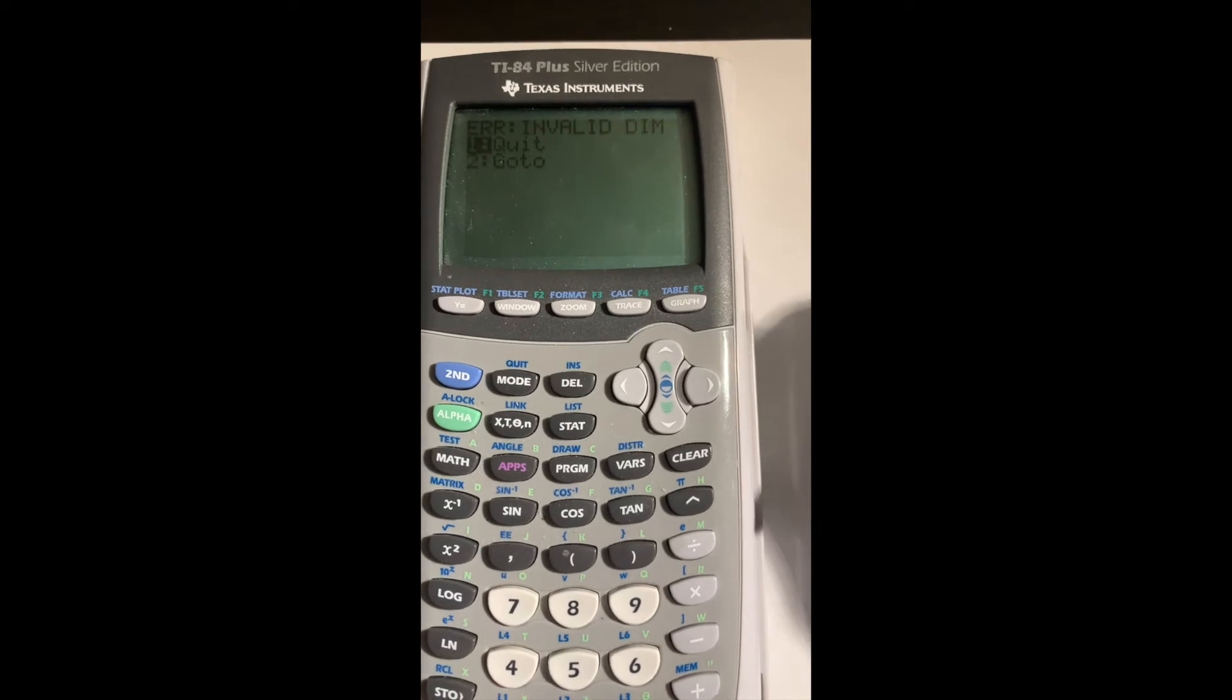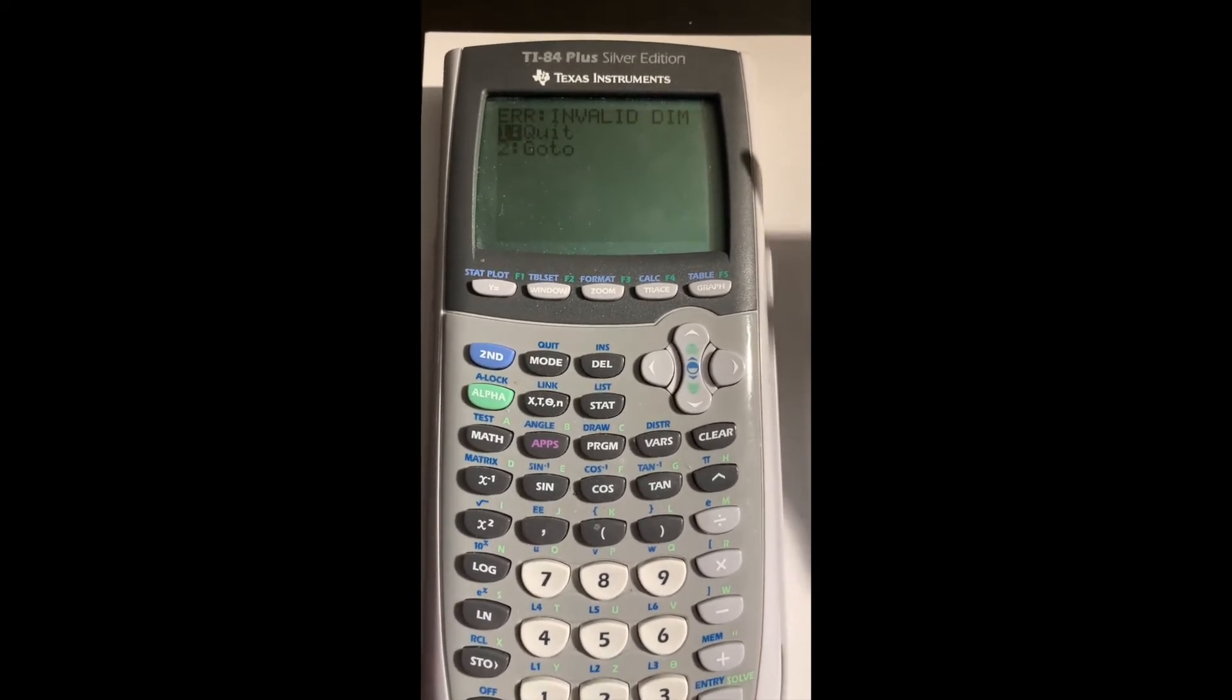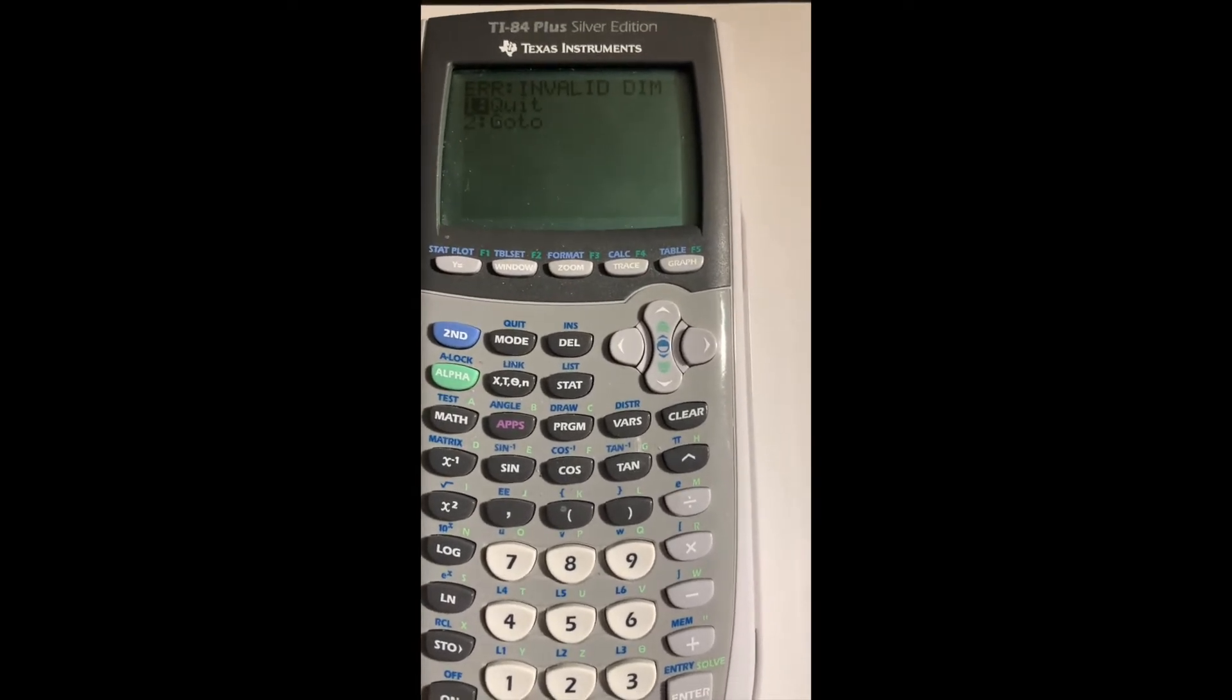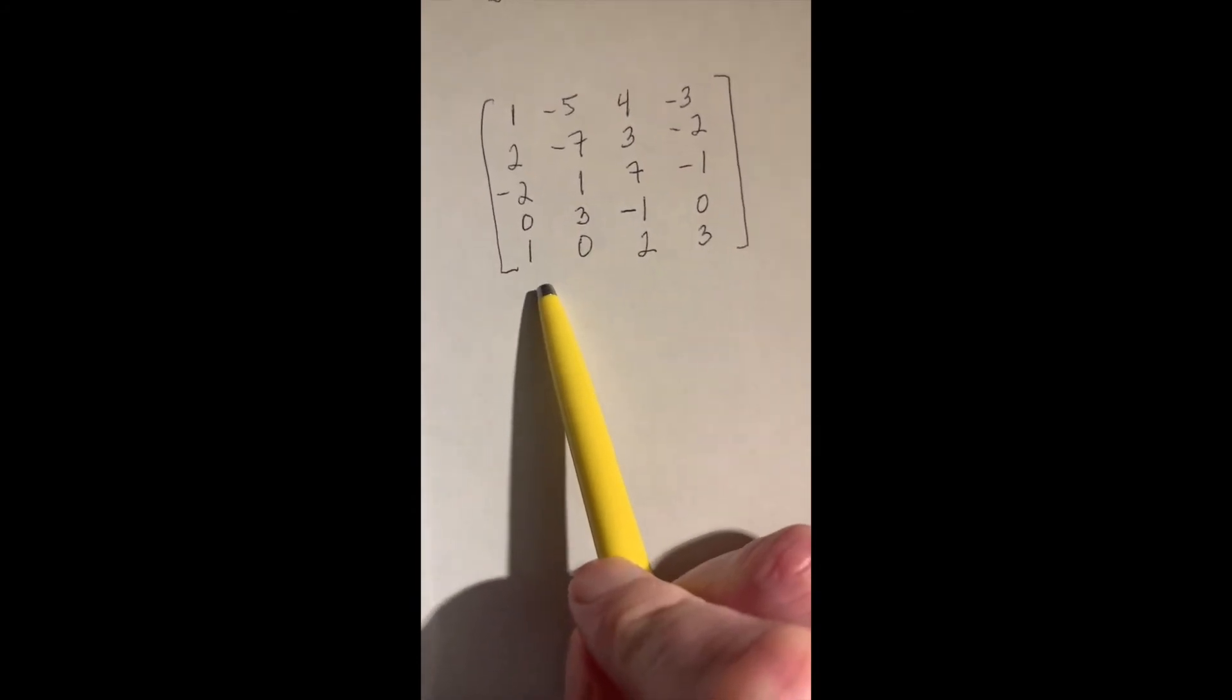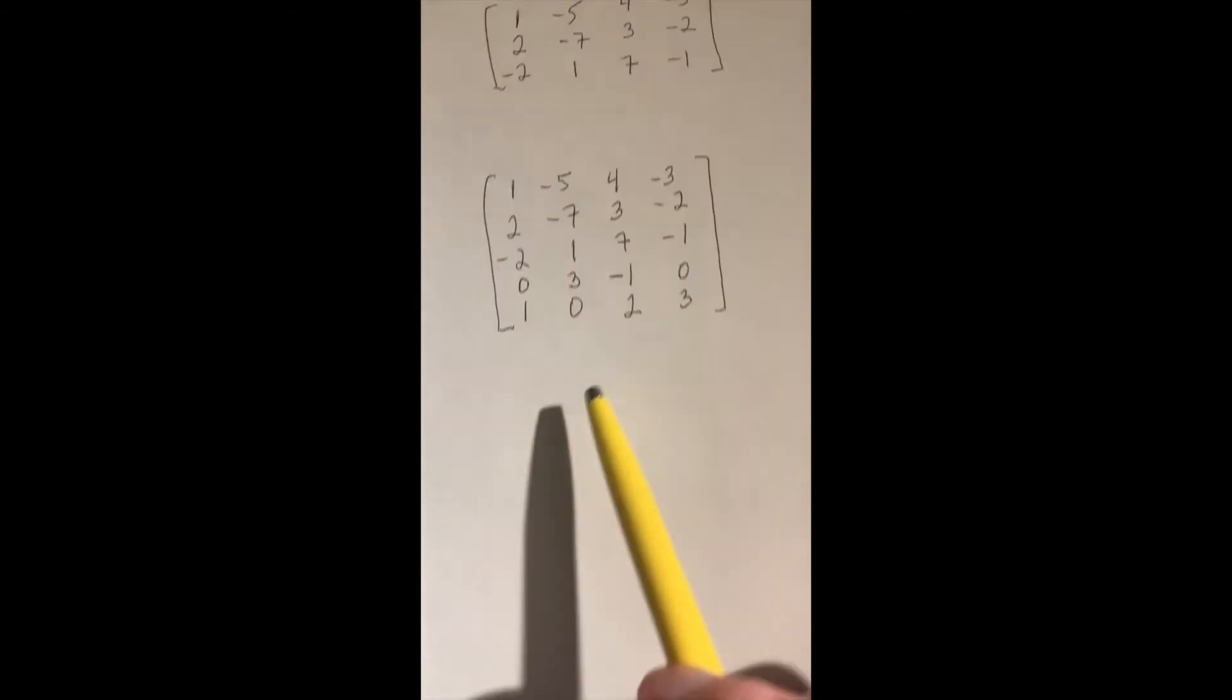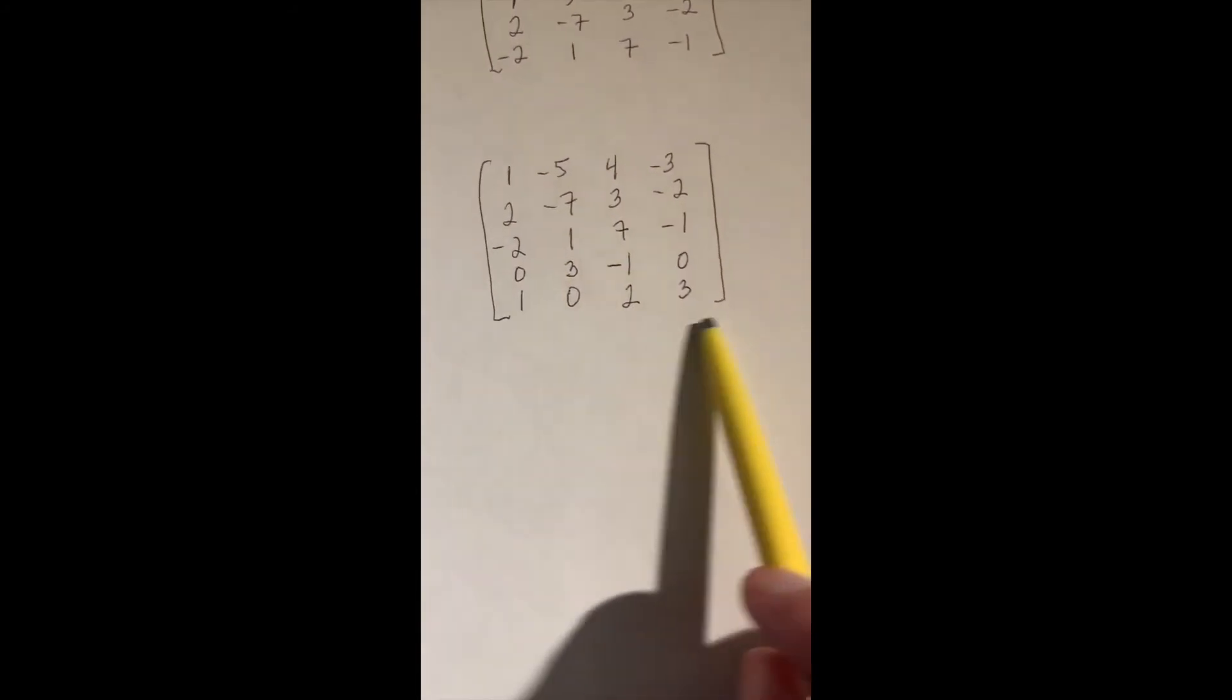This has happened on every TI-83 and 84 calculator I've used, but it may be dependent on the operating system. When this happens, the matrix has more rows than columns. Up here, we had more columns than rows, that's fine. If the number of rows and columns are equal, that's also fine. But if you try to row reduce a matrix that has more rows than columns, like this has five rows and only four columns, it'll give you this dimension error.